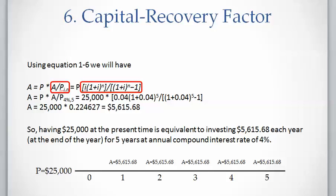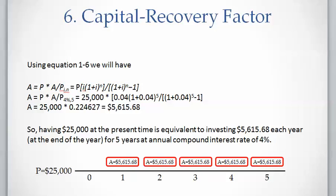For the factor we have i equals four percent and n is five. The result tells us twenty-five thousand dollars at present time is equivalent to five uniform payments of five thousand six hundred sixteen dollars starting from year one to year five with four percent annual interest rate.